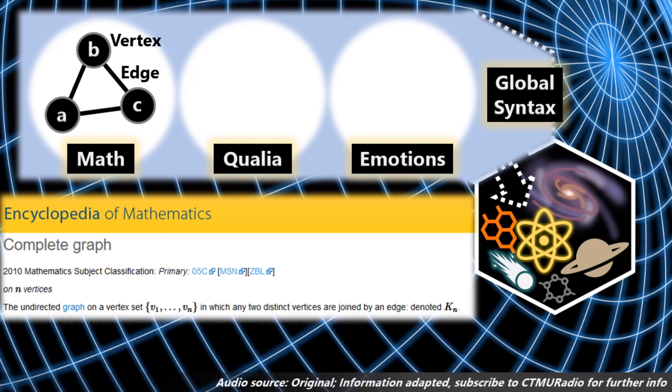Basically, when you talk about distinguishable feelings, emotions, and qualia, each of those is a KN complete graph with a certain number of vertices. And these graphical structures exist in syntax.